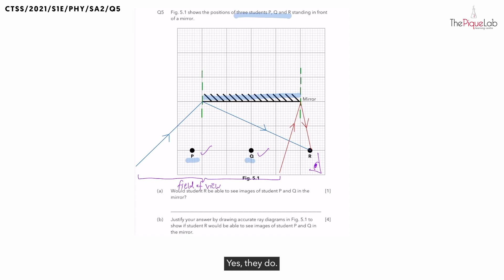Yes, they do. This allows student R to observe the images of student P and Q using this mirror, quickly giving us our answer as yes for part A.